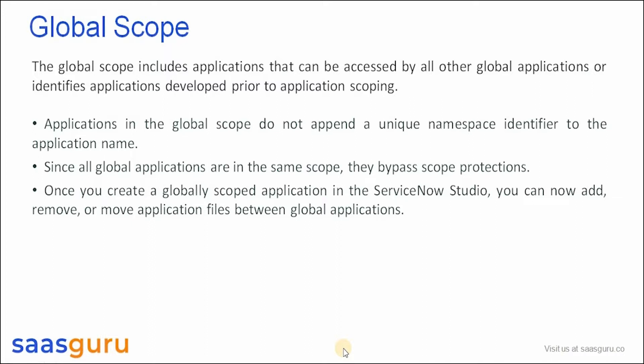The Global Scope doesn't provide any boundaries when compared to the Application Scope. This means that any component created in a Global Application A can be moved or used in another Global Application created in the same scope. All Global Applications do not enforce a unique namespace identifier for an Application Name, unlike what we saw in the Application Scope.